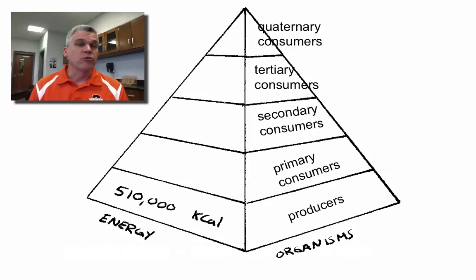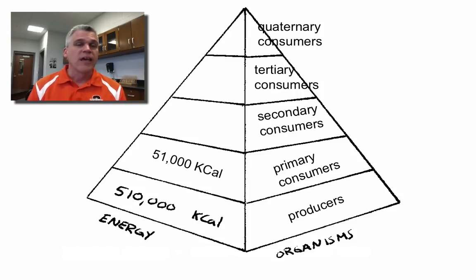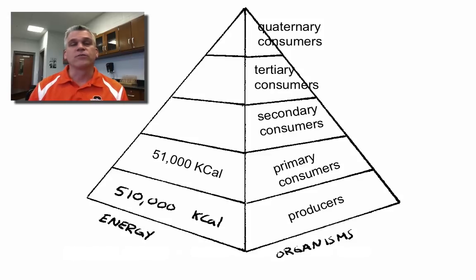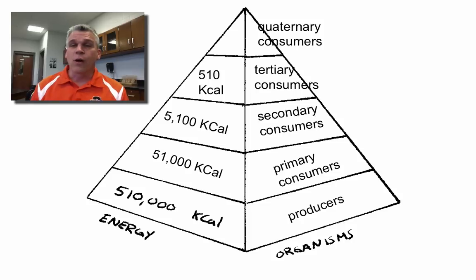Some of those producers are going to be using that energy to maintain themselves. But primary consumers are going to eat these producers as well. Of the 510,000 kilocalories available to the primary consumers, they only actually get about 51,000 kilocalories. When a secondary consumer eats a primary consumer, of those 51,000 kilocalories, they're only getting 5,100 kilocalories. A tertiary consumer eating a secondary consumer is only getting 510 kilocalories, and a quaternary consumer eating a tertiary consumer is only getting 51 kilocalories.